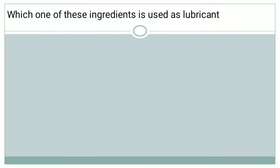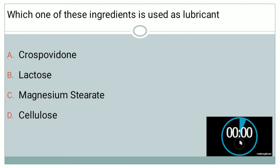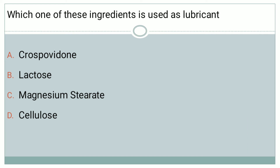The next question is: which one of these ingredients is used as a lubricant? Options are: A — crospovidone, B — lactose, C — magnesium stearate, and D — cellulose. The correct answer is magnesium stearate.